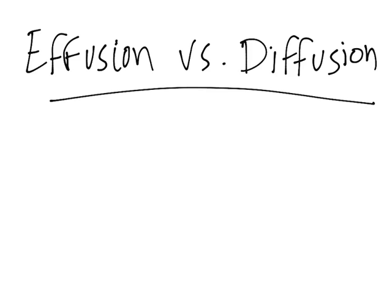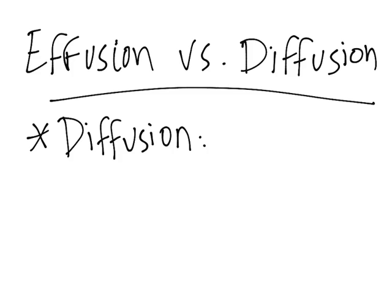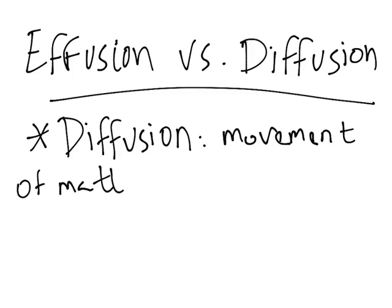Whenever we say something diffuses, diffusion is when it moves through space. So to define it well, diffusion is the movement of matter through space.